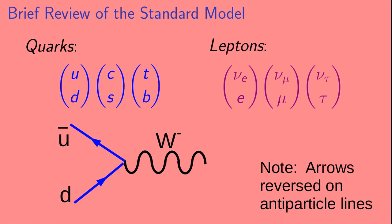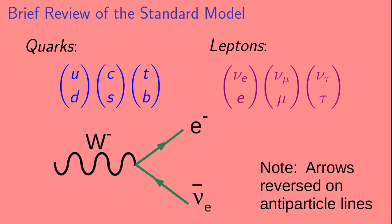For example, let's look at the interaction of the W with the first quark family, which contains the up and down quarks. This interaction allows, for example, an up-type anti-quark to collide with a down-type quark, producing a W-minus. There are similar interactions with the other families.